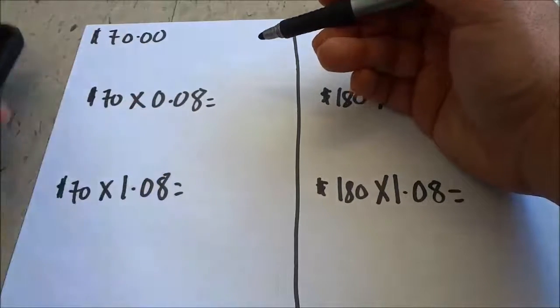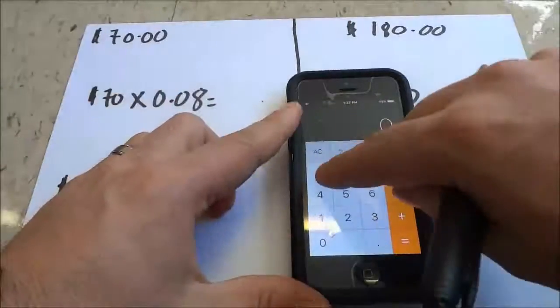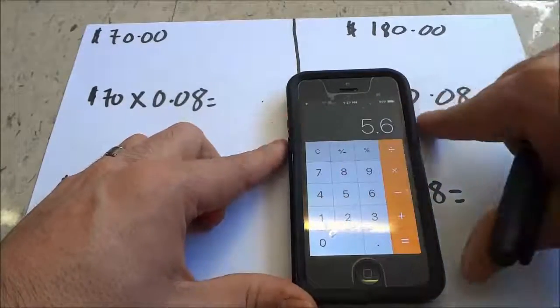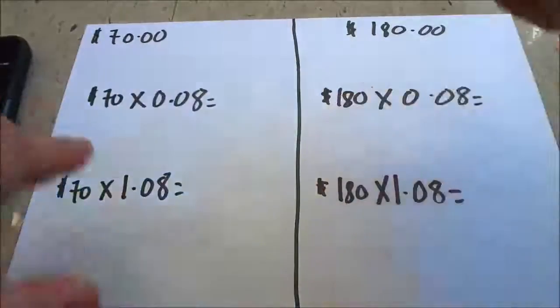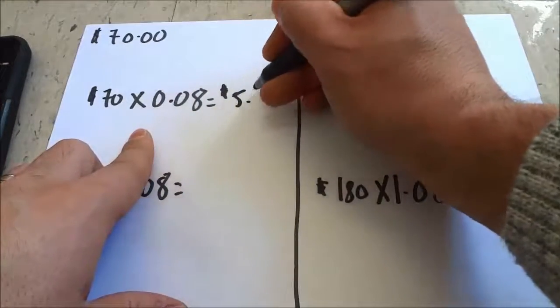all we have to do to calculate the sales tax is multiply 70 × 0.08, and that gives us 5.6, which means $5.60.